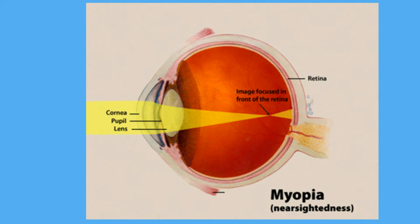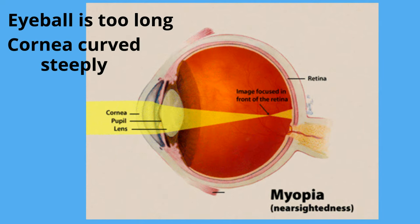Nearsightedness may be caused by an eyeball that is too long or a cornea that is curved steeply. As a result, as light passes through the lens, the image comes into focus at a point in front of the retina. This results in a blurry image.